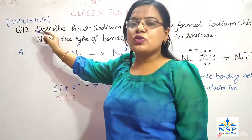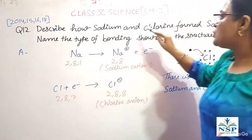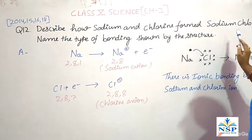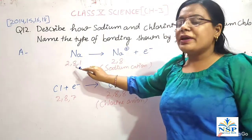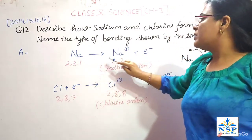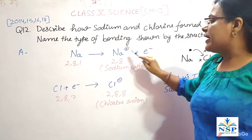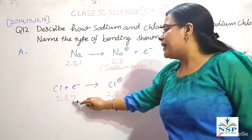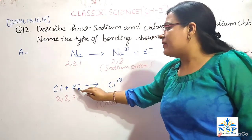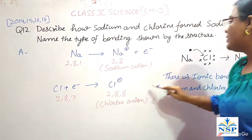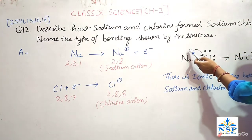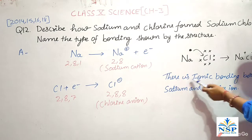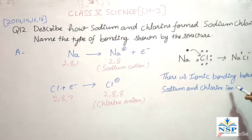Our next very important question: describe how sodium and chlorine form sodium chloride and name the type of bonding. Sodium has atomic number 11 (2, 8, 1). When it gives 1 electron, it forms a sodium cation. Chlorine has atomic number 17 (2, 8, 7). It receives 1 electron and forms a chlorine anion. When sodium gives 1 electron to chlorine, it forms NaCl. There is ionic bonding between the sodium and chlorine ions.